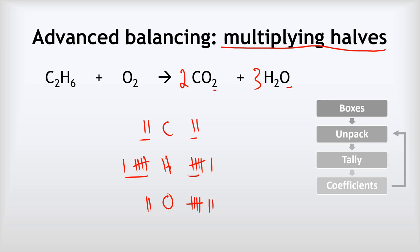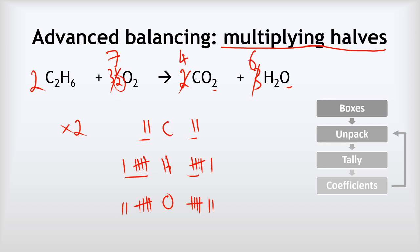This is where the trick comes in. I could put 3½ in front of O₂, because 3½ × 2 = 7 oxygens. But we can't have fractions in a balanced equation. So once you find yourself needing a half, multiply everything through by the denominator — in this case, double everything. C₂H₆ becomes 2C₂H₆, 3½O₂ becomes 7O₂, 2CO₂ becomes 4CO₂, and 3H₂O becomes 6H₂O.